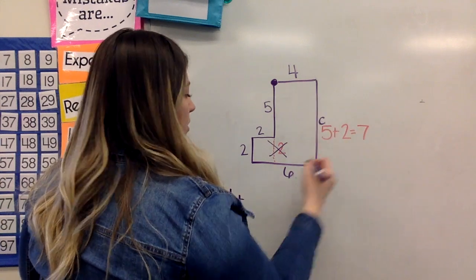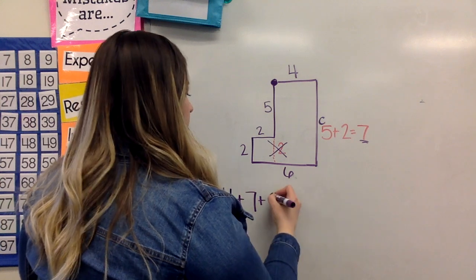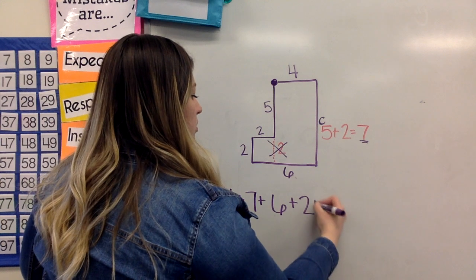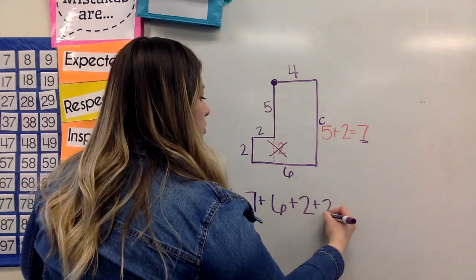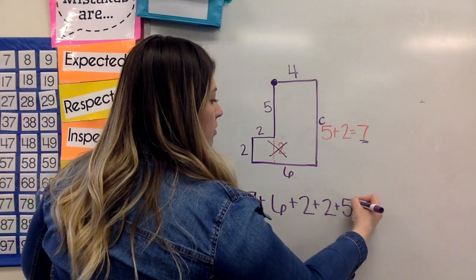plus seven, my missing side length, plus six, plus two, plus two, and then plus five to finish it off.